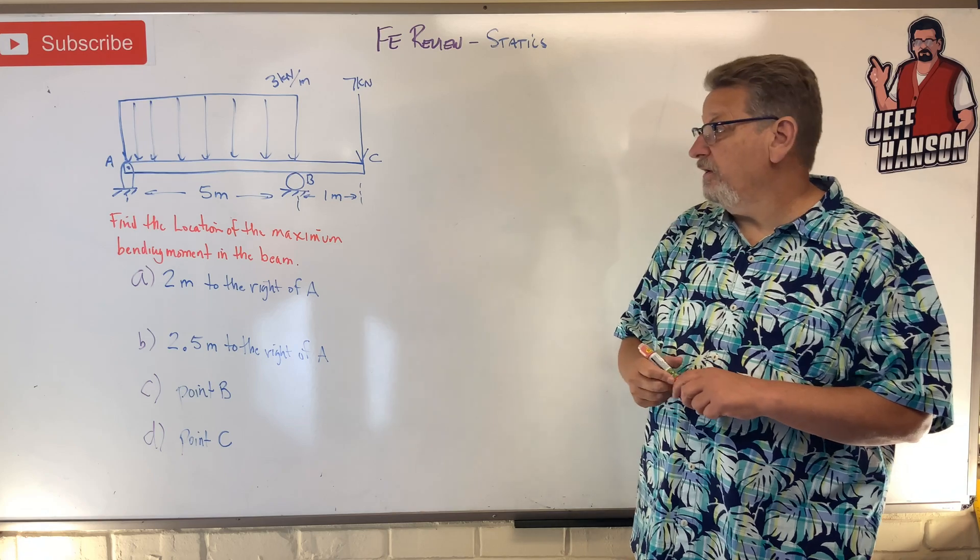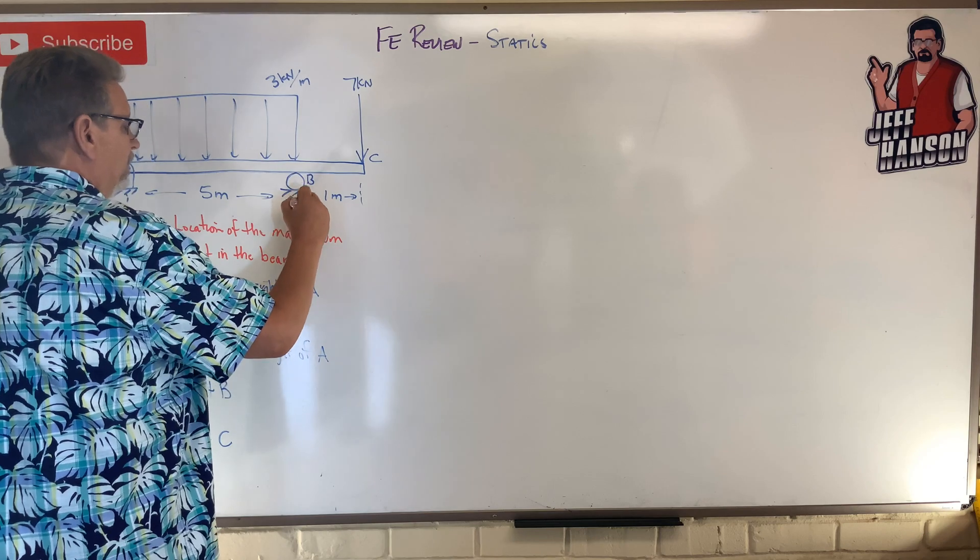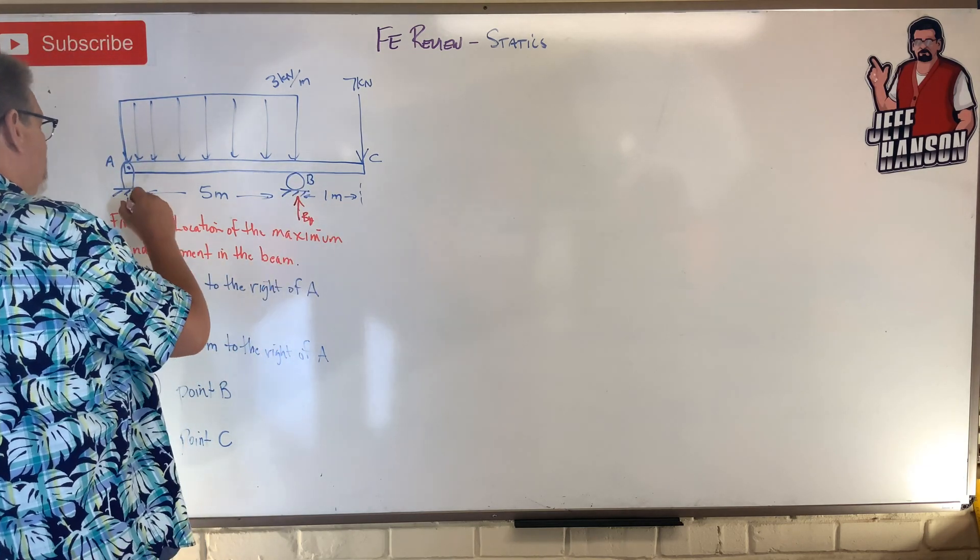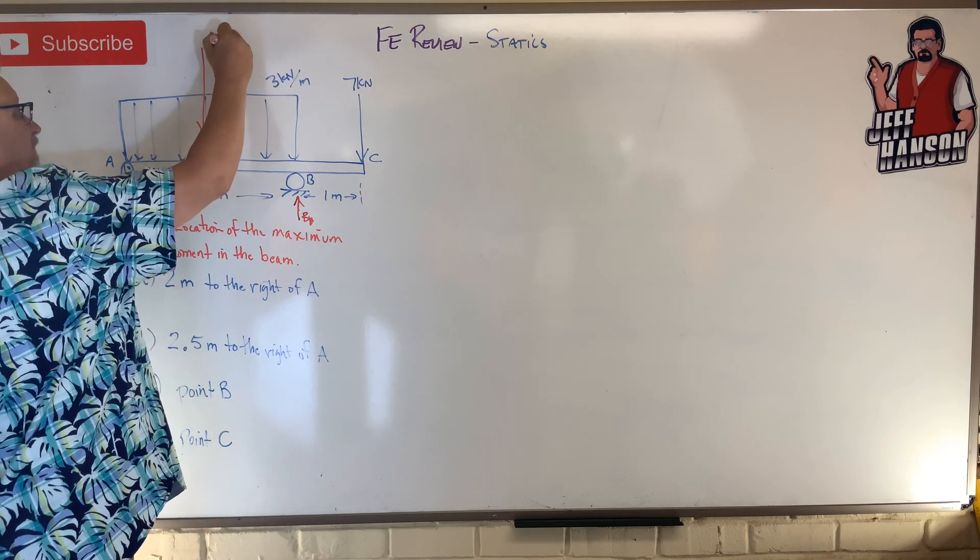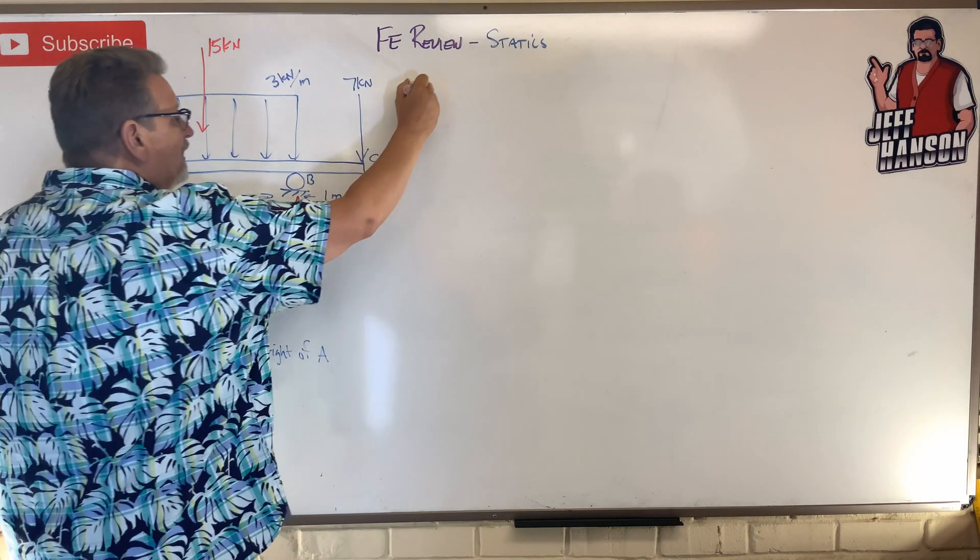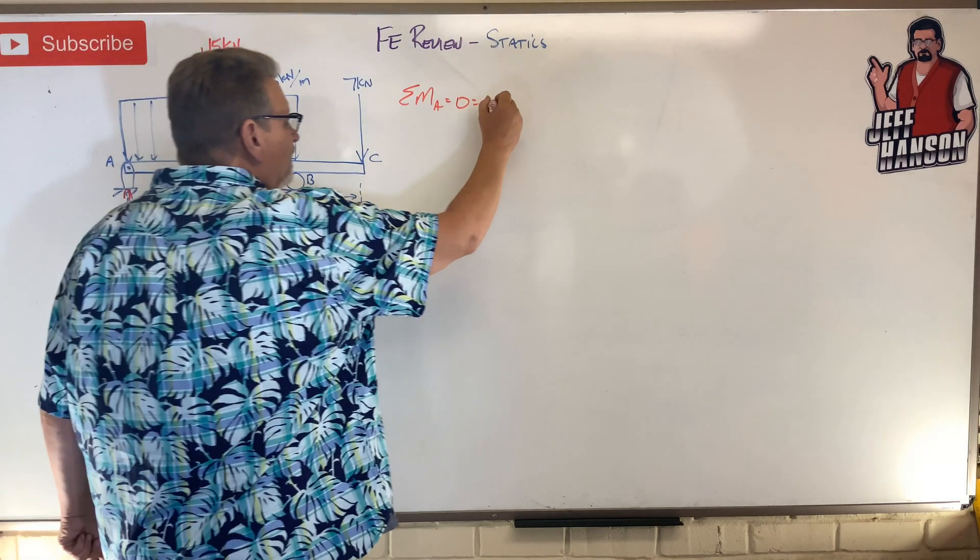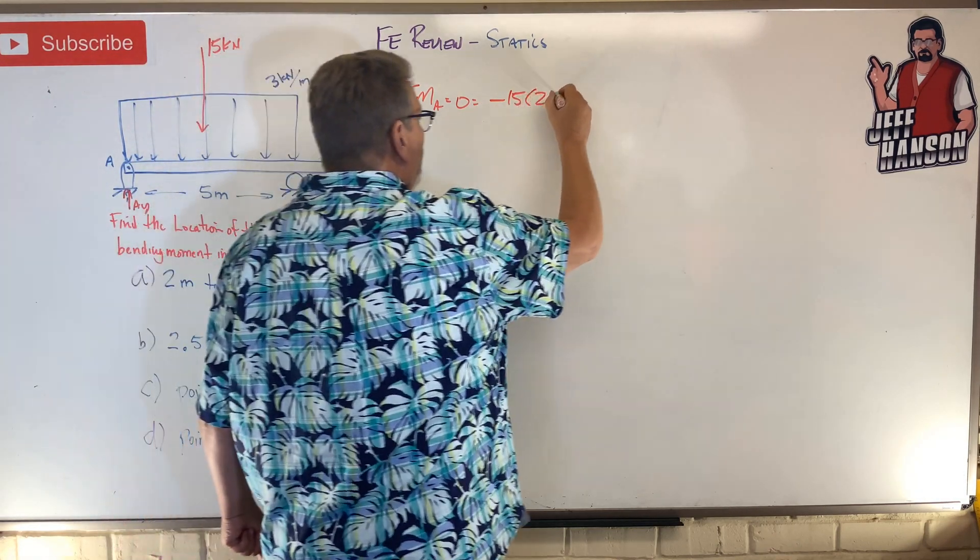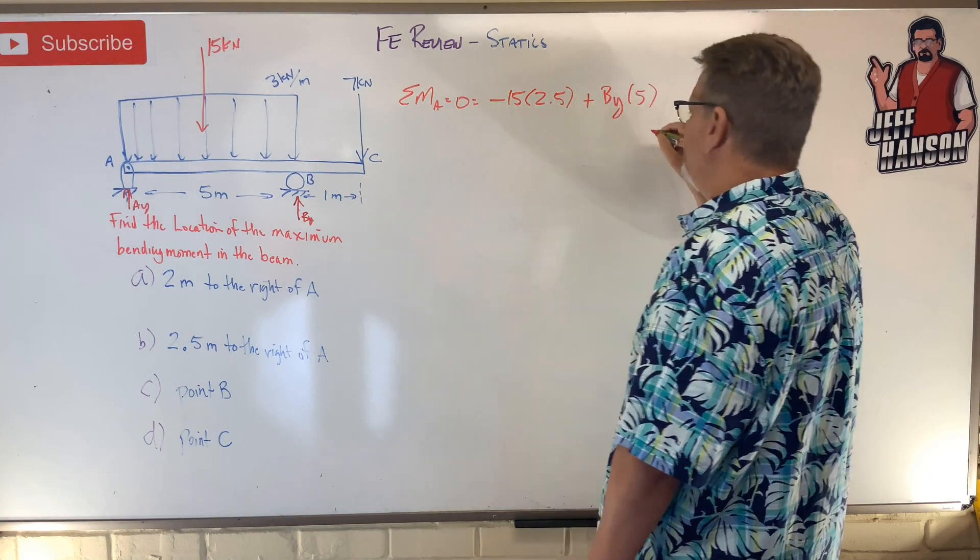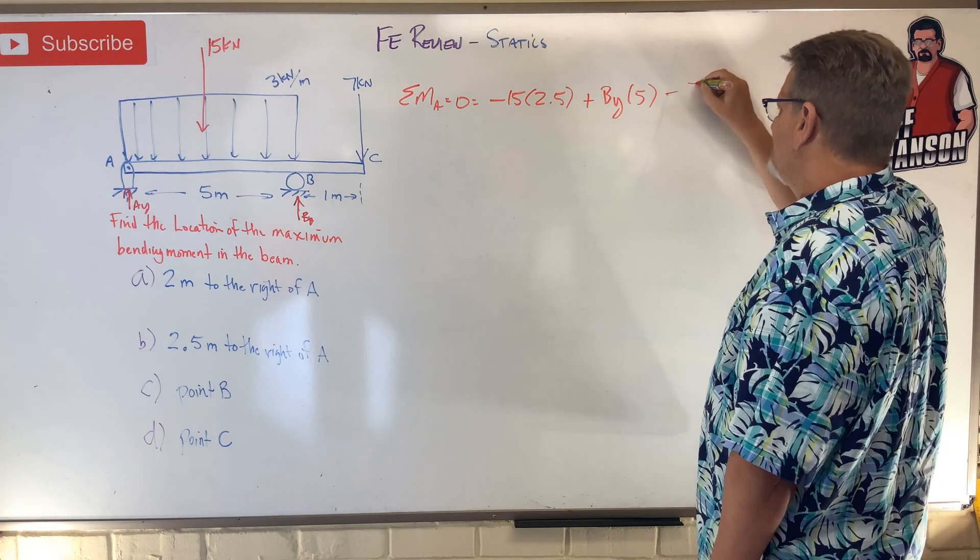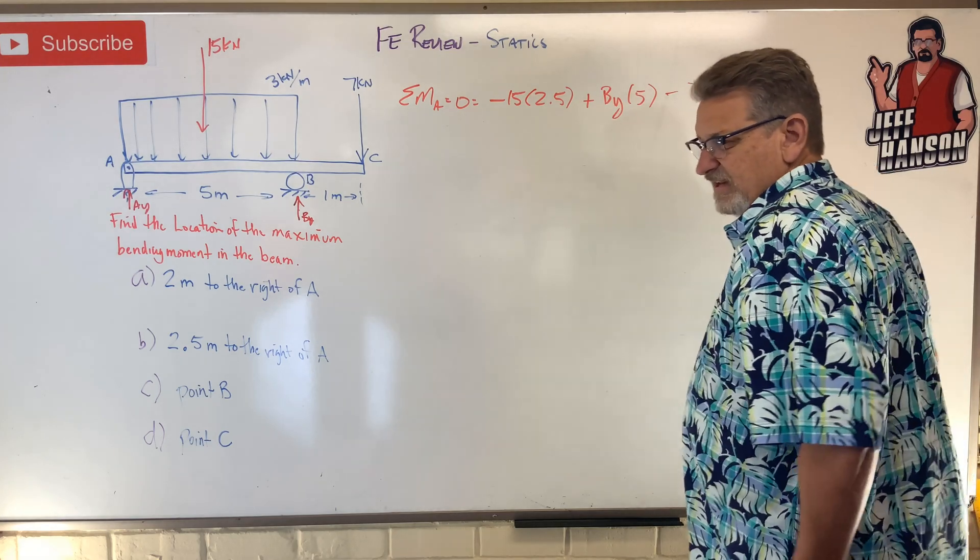All right, number one. I gotta know my global reactions here, By and Ay. I know I have a distributed load here that's 3 by 5, that's 15 kilonewtons. So I can sum the moments at A and what do I get? 15 rotating me minus, minus 15 times 2.5, right, and then plus By times 5, and then minus 7 times 5 plus 1, 6. Let's see what that is.